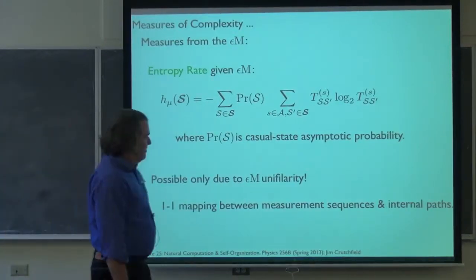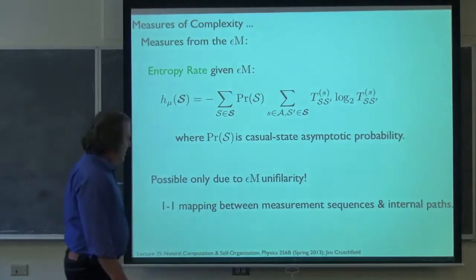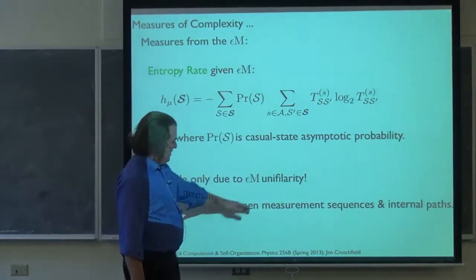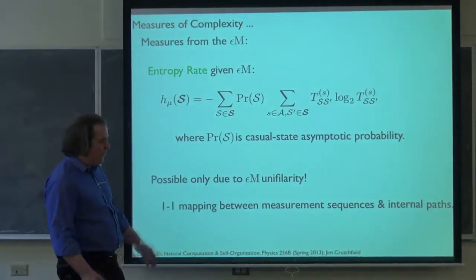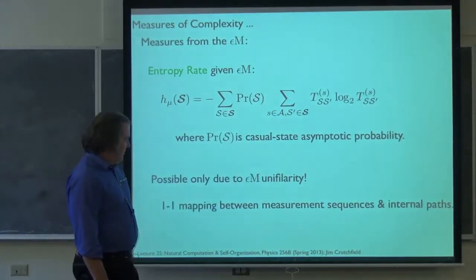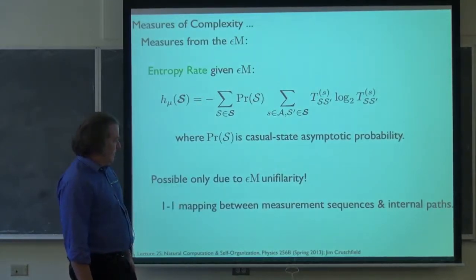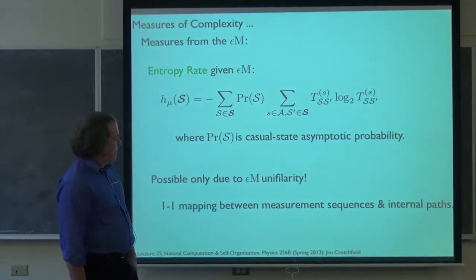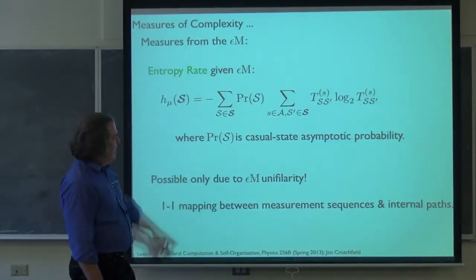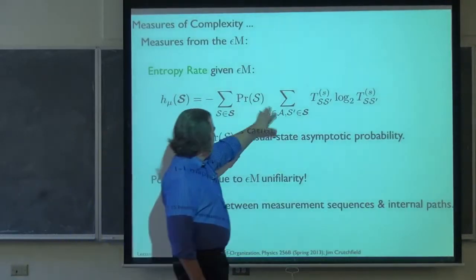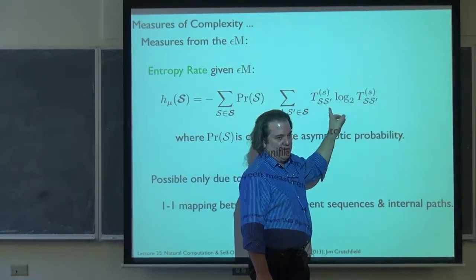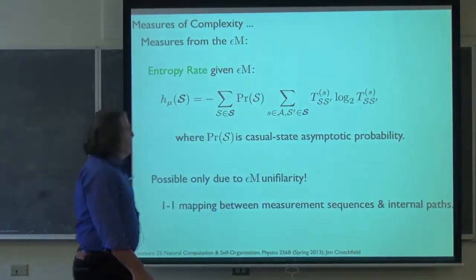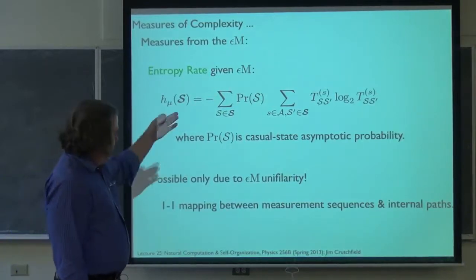We can use this formula because the epsilon machine is unifilar, as we proved last Thursday. This is one of the key benefits of using the epsilon machine — we have a closed-form expression for the entropy rate. Basically we need to use the epsilon machine to calculate the entropy rate simply because it's unifilar. There might be other presentations like prescient rival models that are also unifilar — we can use those too, but the epsilon machine also works. Unifilar means there's a one-to-one correspondence between observed sequences and internal state paths, so using internal states and state-to-state branching uncertainty properly reflects the observed process.